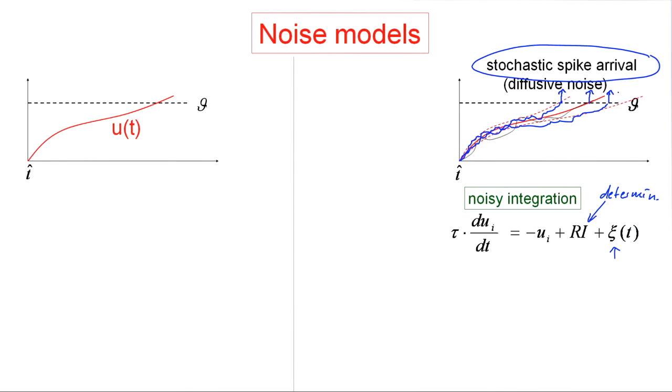So this is a first noise model. I call this diffusive noise because this noise term leads to a diffusion of the actual trajectory away from the noise-free reference trajectory.